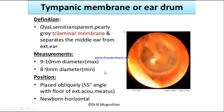Regarding position, the tympanic membrane is placed obliquely at a 55-degree angle with the floor of the external acoustic meatus. It is not straight — it is oblique. In newborns, the membrane is in a horizontal position, whereas in adults it is oblique.